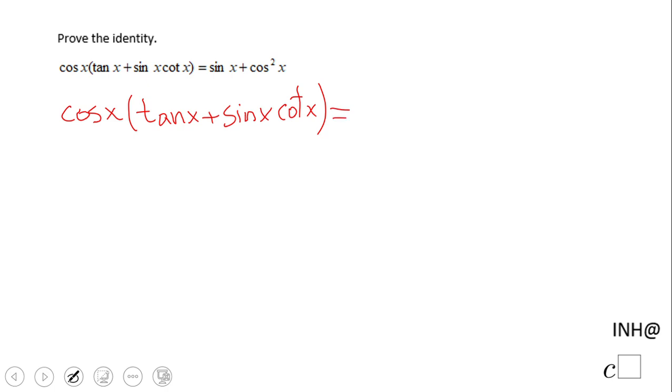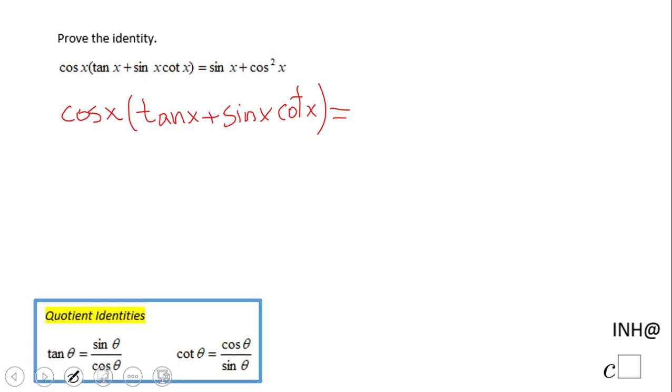Look here, I have two identities which we call quotient identities. I'm going to use those. Cosine of x, and tangent is going to be sine over cosine, like you see down here.